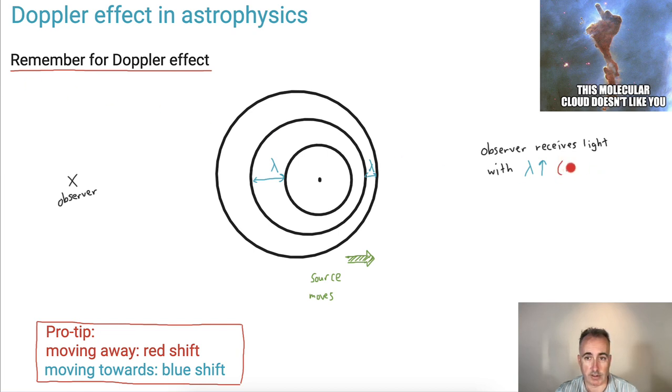So we have a word for this. If something is moving away from you, we call it a red shift. And if something is moving towards you, we call it blue shift, just because redder means higher wavelengths, bluer means lower wavelengths.